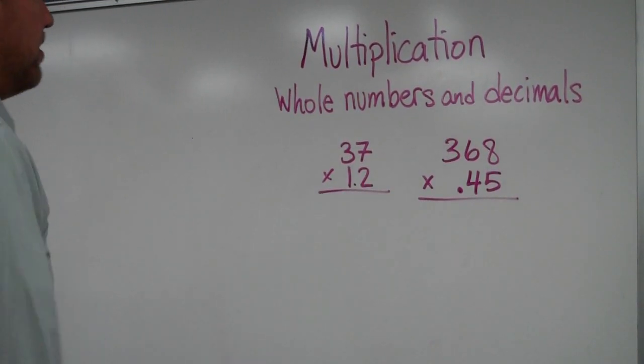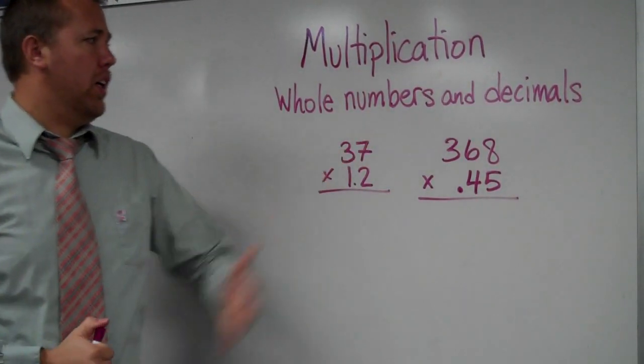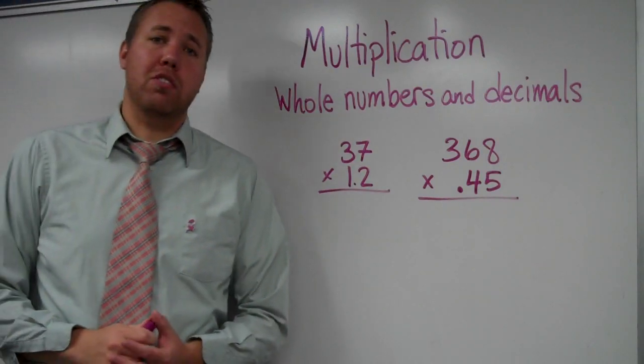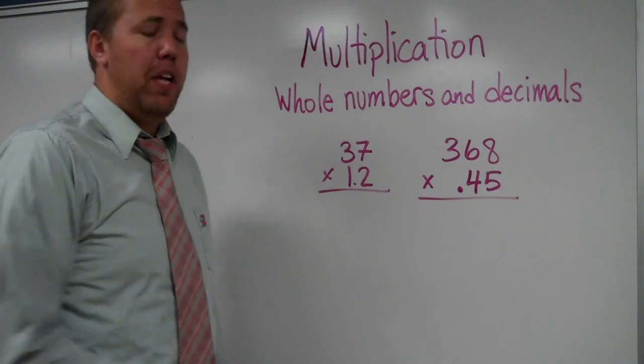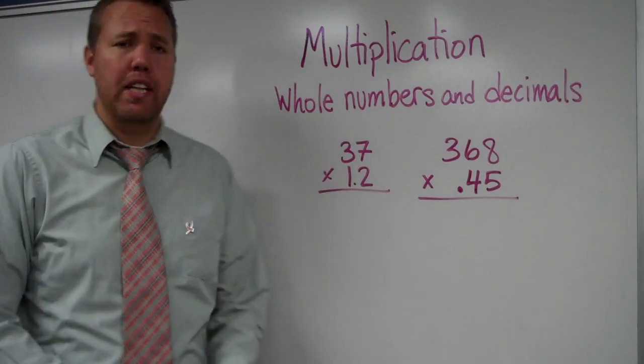As we continue on in our multiplication skills, we want to cover whole numbers and decimals, timesing a whole number such as 37, multiplying that by a number that has a decimal in it.